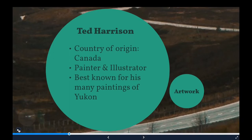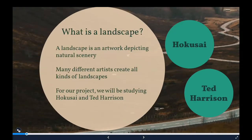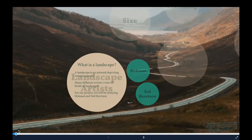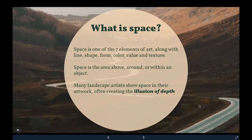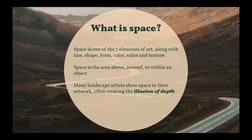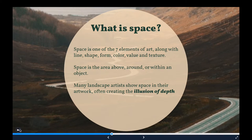Both Ted Harrison and Hokusai are landscape artists, and they both use space in their artwork. What is space? Space is one of the seven elements of art, along with line, shape, form, color, value, and texture. Space is the area above, around, or within an object. Many landscape artists show space in their artwork, often creating the illusion of depth.